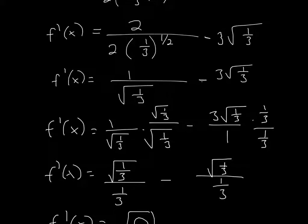Here, I'm just simplifying it a little more, multiplying both the numerator and denominator by square root of 1 over 3. Same thing here, multiplying by 1 third on both the numerator and the denominator.